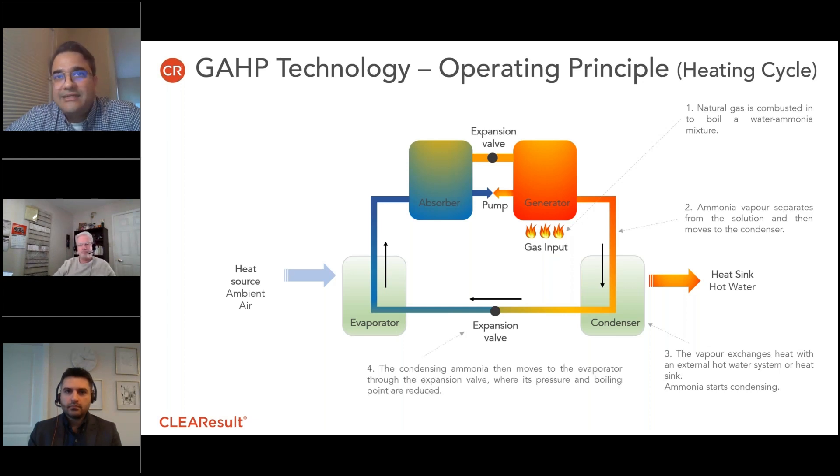This heat exchange cools the ammonia and it makes its way to the expansion valve starting to condense. The expansion valve reduces the pressure and the boiling point of the ammonia, which then enters the evaporator where we have free heat collected from the outdoor or ambient air.